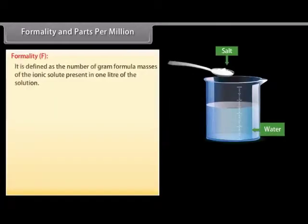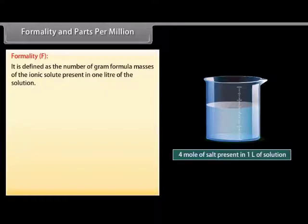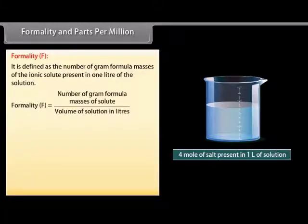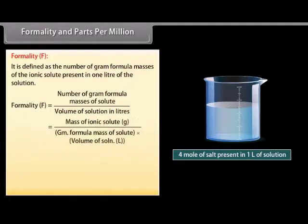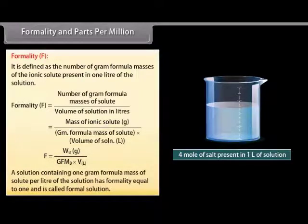Formality is defined as the number of gram formula masses of the ionic solute present in 1 liter of the solution. It is represented by F. Mathematically, formality F is equal to W_B in grams divided by the product of gram formal mass of B and volume of solution in liter. A solution containing 1 gram formula mass of solute per liter of solution has formality equal to 1 and is called a formal solution.